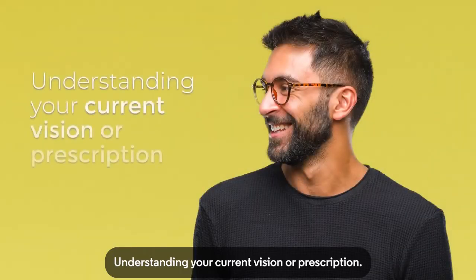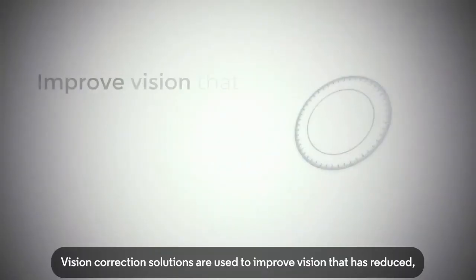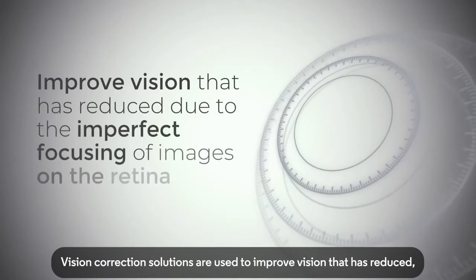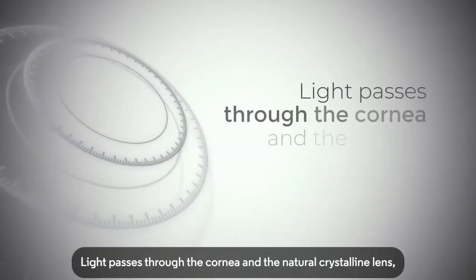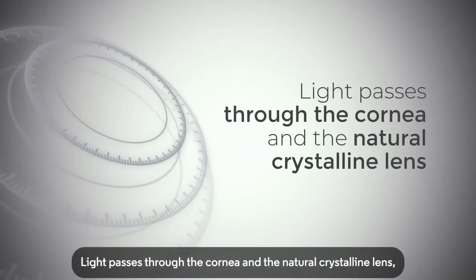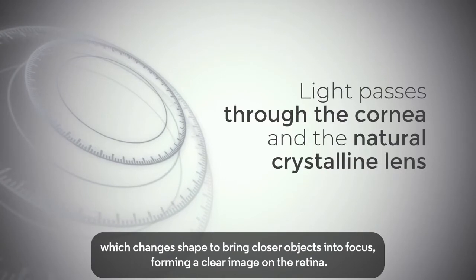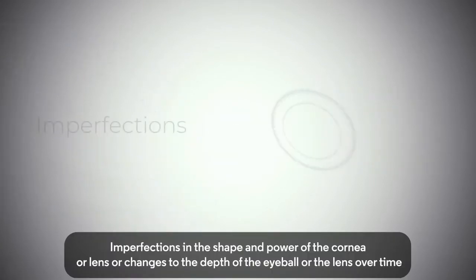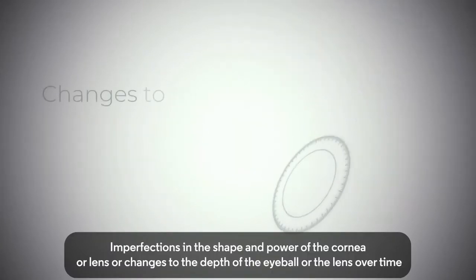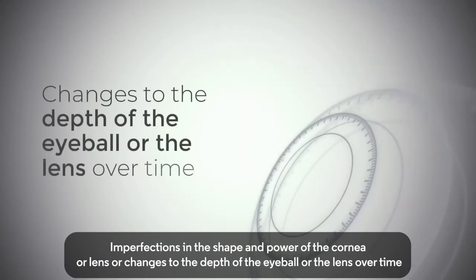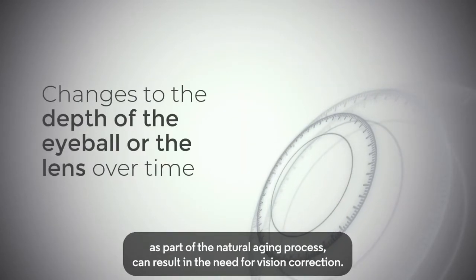Vision correction solutions are used to improve vision that has reduced due to the imperfect focusing of images on the retina. Light passes through the cornea and the natural crystalline lens, which changes shape to bring closer objects into focus, forming a clear image on the retina. Imperfections in the shape and power of the cornea or lens, or changes to the depth of the eyeball or lens over time as part of the natural ageing process, can result in the need for vision correction.